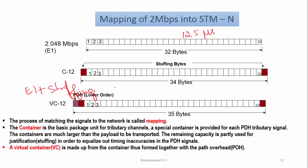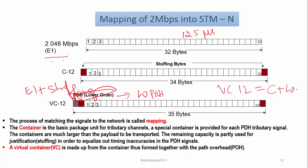The next step is adding a lower-order path overhead to the container. Lower-order path overhead is added to monitor, manage, and perform operations, administration, and maintenance of lower-order signals. If you want to manage an E1 signal from source to destination, you need to manage it through this lower-order path overhead. The virtual container equals the container plus the lower-order path overhead.